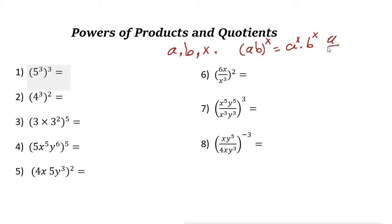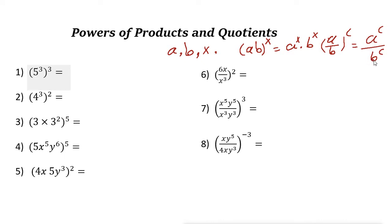We also have the rule for quotients: (A/B)^c equals A^c over B^c. So A to the power of C divided by B to the power of C.